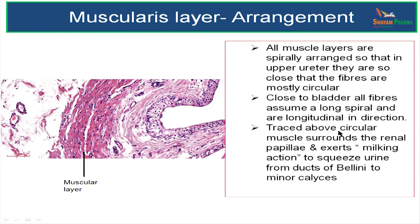Traced above, that is towards the kidney, the circular muscle layer is going to surround the renal papilla and it is going to exert a milking action to squeeze the urine from the ducts of Bellini to the minor calices, then into the major calyx, renal pelvis, and into the ureter proper.